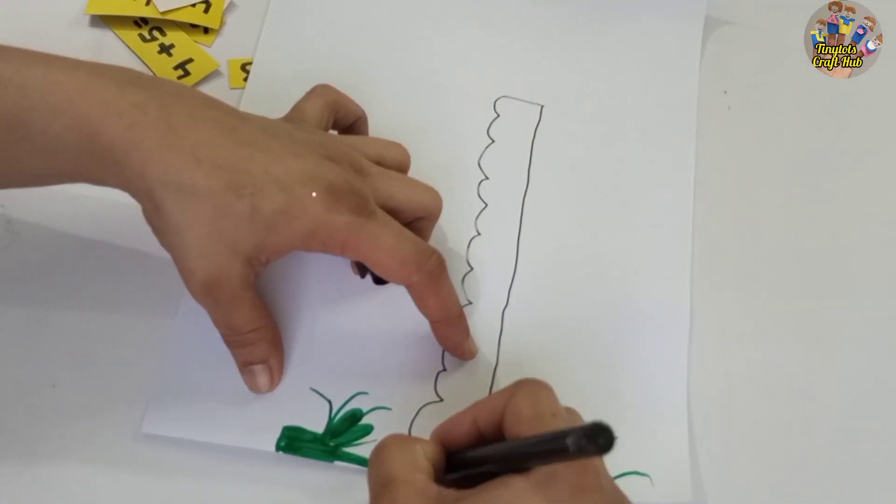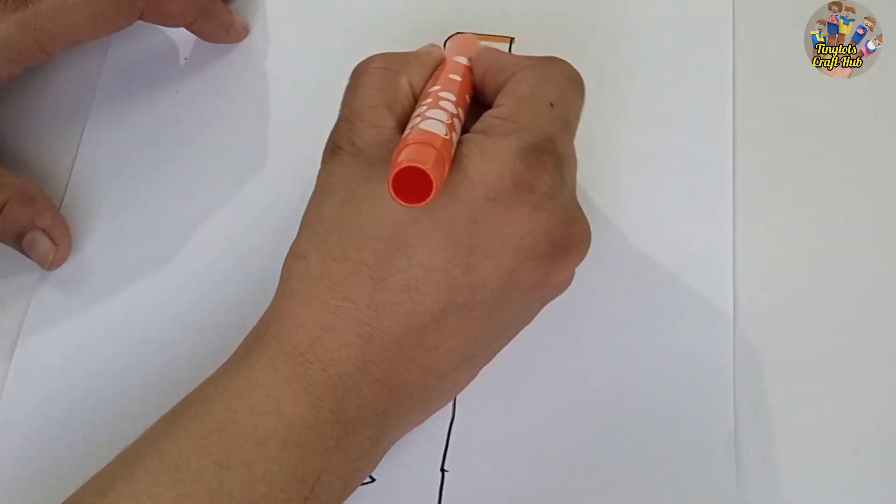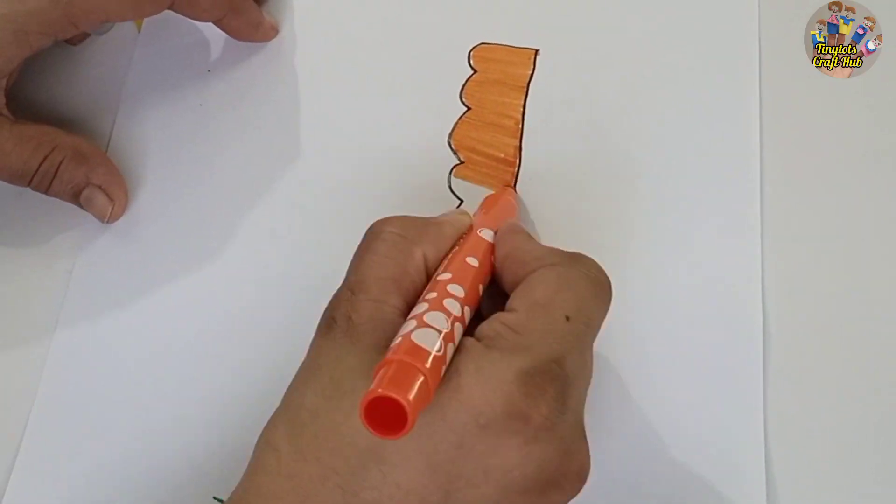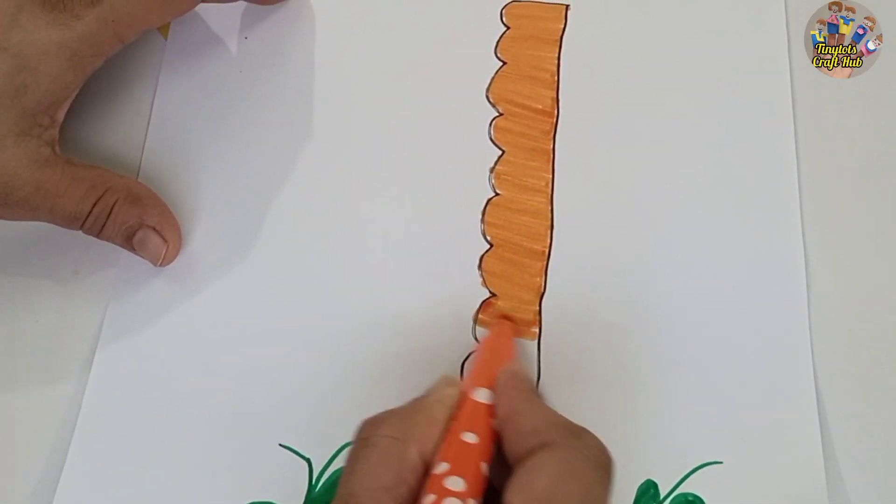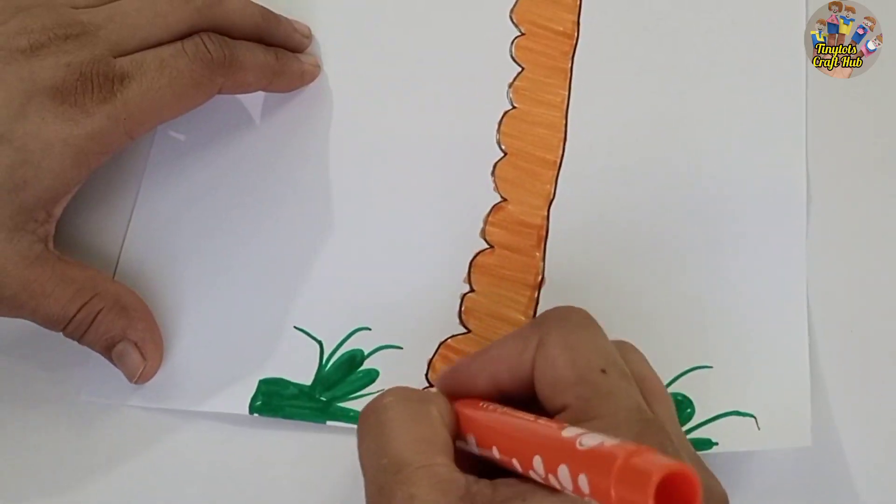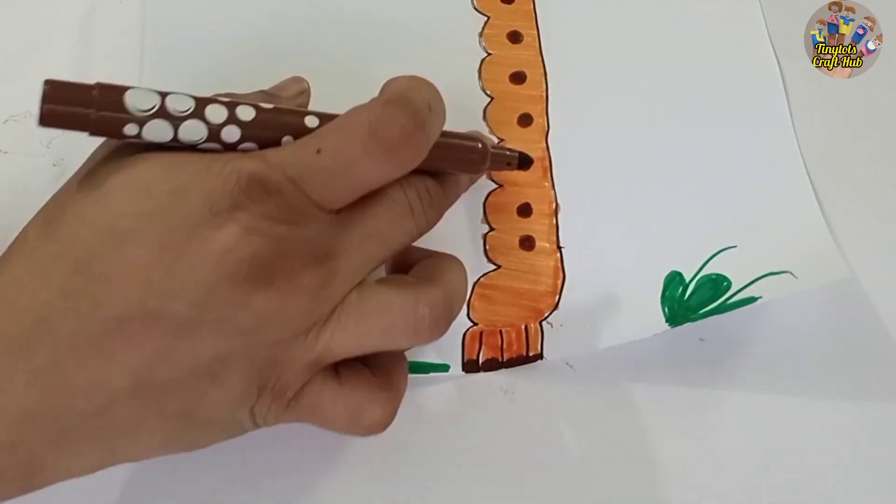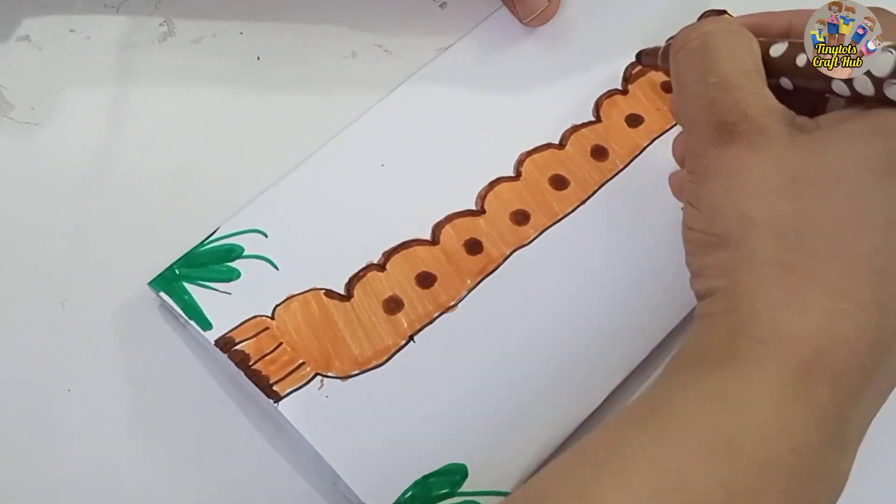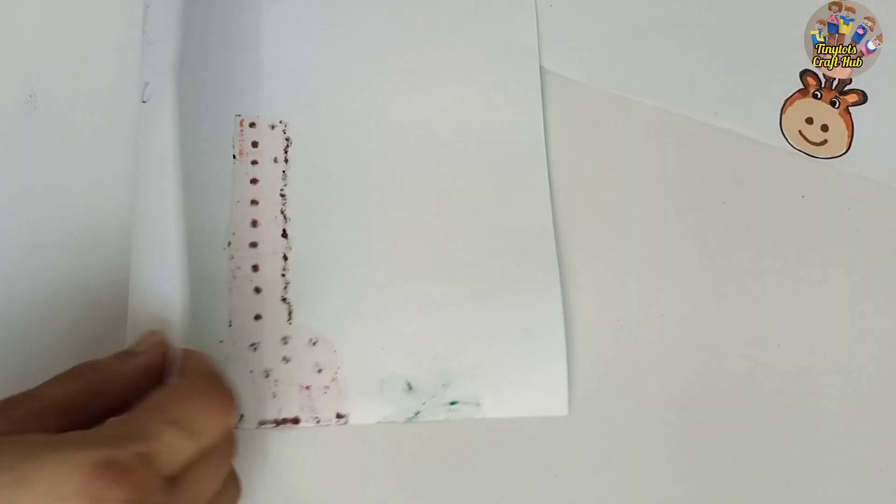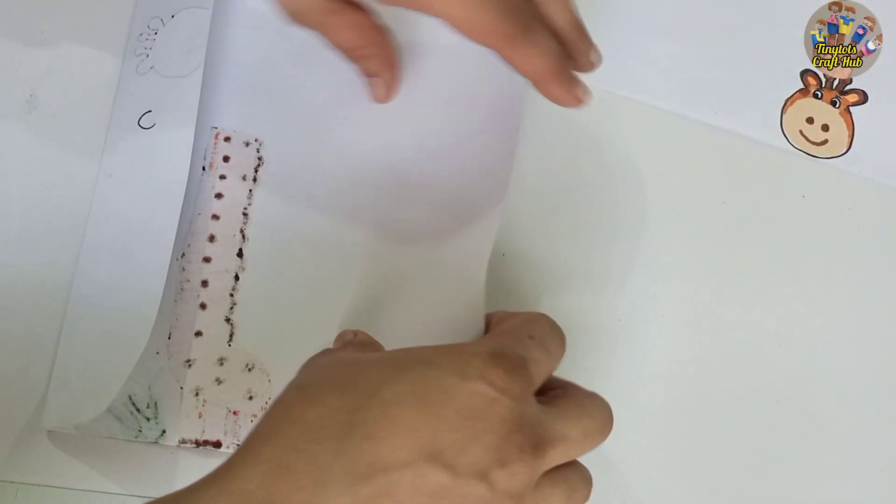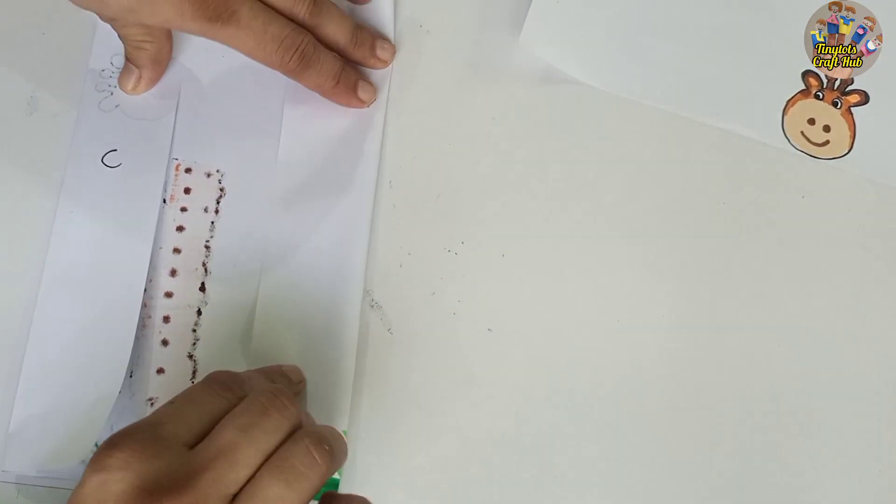So the neck should be long enough that your 10 dots will come on it. So you will color it with the orange color and we will also apply 10 dots on this. So you can see 10 dots are there: 1, 2, 3... and 10. So you will fold the page, this giraffe neck one, and then you will fold the face page of the giraffe.